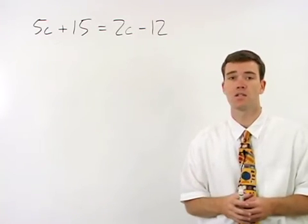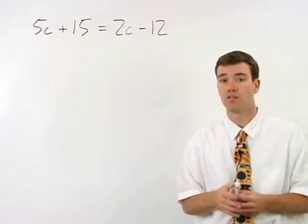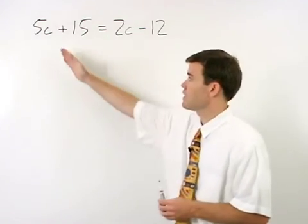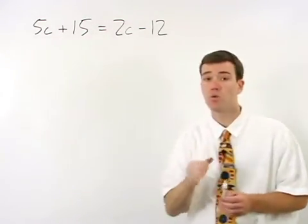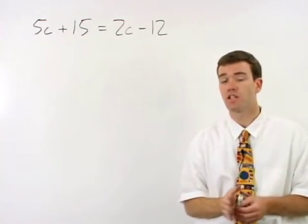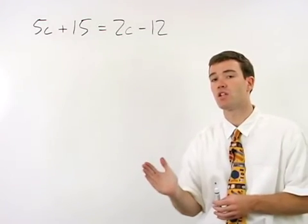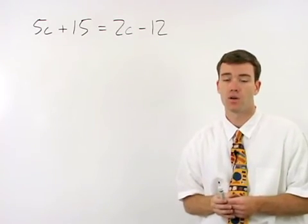Here our goal is basically the same as it was in the previous two examples. Since our variable, in this case c, appears on both sides of the equation, we want to put our c terms together on one side of the equation and put our numbers together on the other side of the equation.